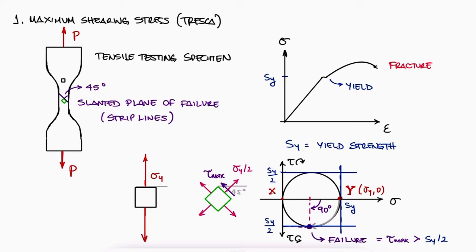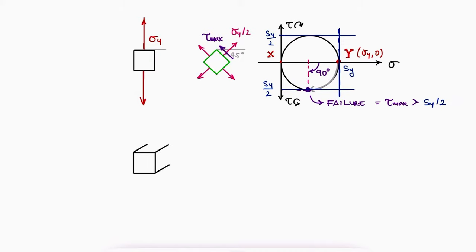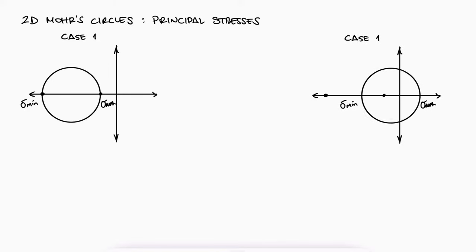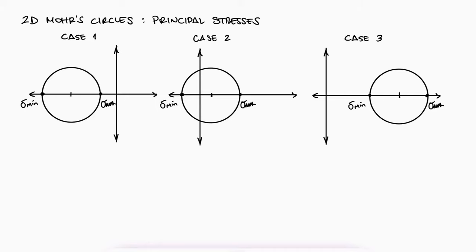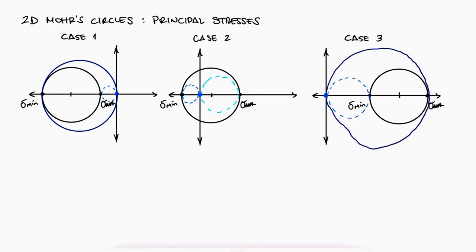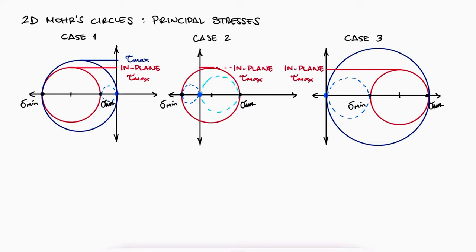Mohr circle diagrams with only one Mohr circle only apply to plane stress elements. For 3D stress elements, the third normal stress sigma z is usually zero, so our Mohr circle diagrams should show three principal stresses. Looking at the three Mohr circle diagram possibilities — both principal stresses negative, both positive, and one of each — we can see that for every stress element we are missing the given stress sigma z equal to zero. Our three-dimensional state of stress and the corresponding Mohr circle for each case can be completed with sigma z equal to zero, where there is a distinction between the in-plane maximum shearing stress and the overall maximum shearing stress.